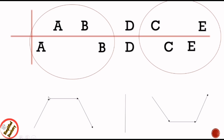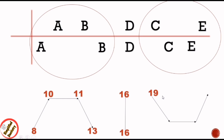Form a trapezium-like structure without a base in the first part, a straight line in the second part, and an inverted trapezium-like structure without a base in the third part. Mention 8, 10, 11, and 13 on the four corners of the first trapezium, 16 on the straight line, and 19, 20, 27, and 29 on the four corners of the inverted trapezium.